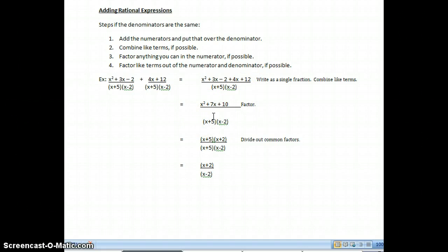Now I'm going to factor. I'm going to factor this x squared plus 7x plus 10 to give me x plus 5 times x plus 2 over x plus 5 over x minus 2. So I didn't factor that one out yet.